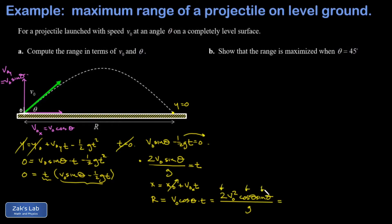I realize that combining 2 times cosine theta times sine theta uses a trig identity — that's the sine of twice theta. So the range simplifies to R = V₀² sine(2θ) divided by G. This is a classic formula that often has a box around it in physics textbooks, but it can get you in trouble if applied in the wrong context: it only applies to a perfectly level surface.